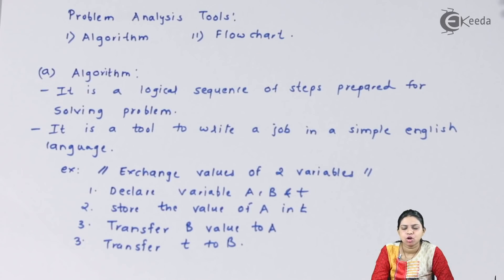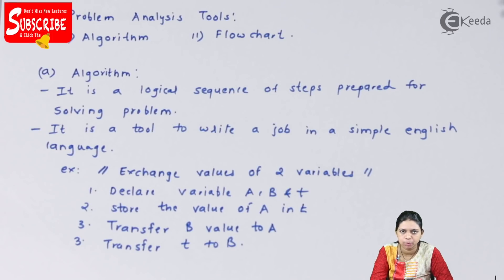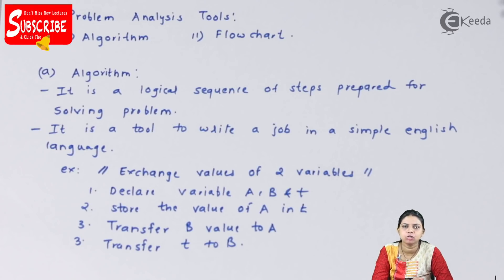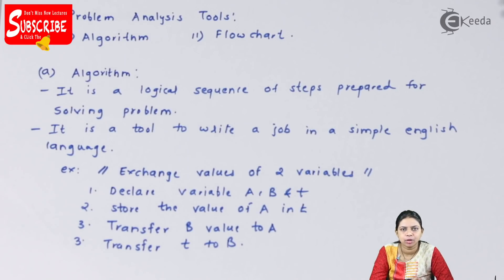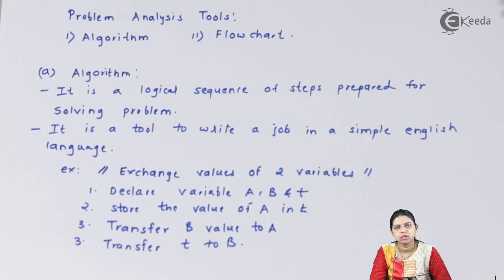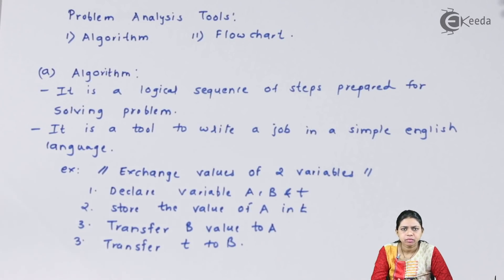Number one is called an algorithm. What is an algorithm? It is a logical sequence of steps prepared for solving a program, and all those steps are written in simple English language. Before writing a program, we first start writing an algorithm.